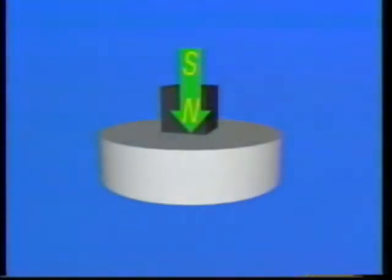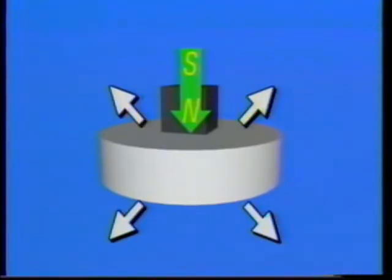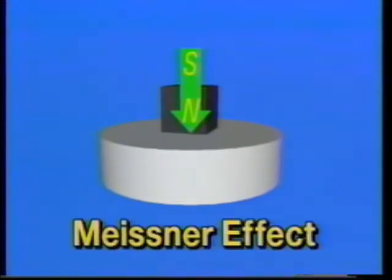During the transition from a normal to superconducting state, the superconductor expels all magnetic field lines passing through it, a physical behavior known as the Meisner effect.